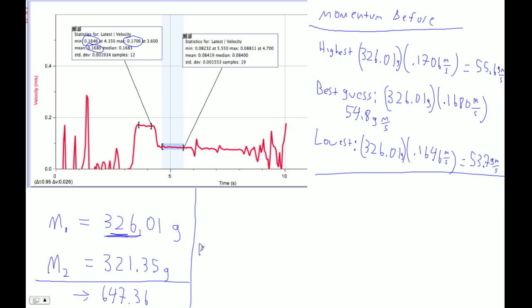So afterwards, our highest, our best guess, is we're going to use the mean. Just remember, mean, like Mr. Murray. OK, so 647.36, and that's grams, times .08419. OK, our best guess is times .08419. It's 54.5.